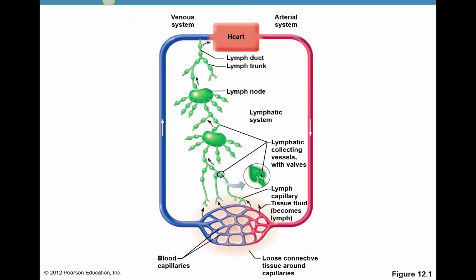Looking at the overall physical layout of the lymphatic system: as blood enters into the tissues via the capillaries, the capillaries are leaky and excess fluid in the blood vessels will leak out. Instead of staying in the tissues and causing continuous edema — which is an inflammation of the tissues due to leaked fluid — there are lymphatic capillaries that will receive that excess fluid and take it back to the blood near the heart through a major vein.